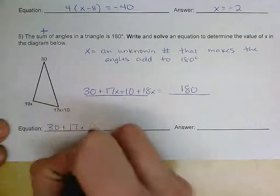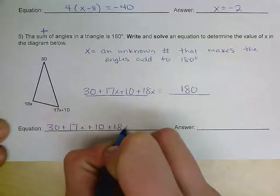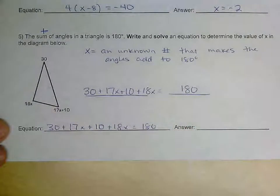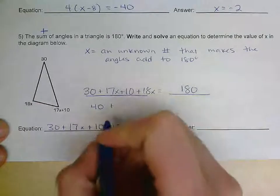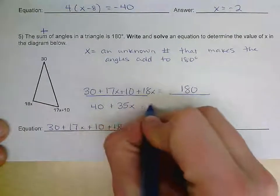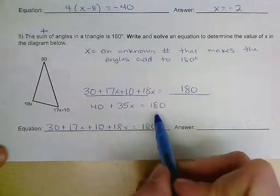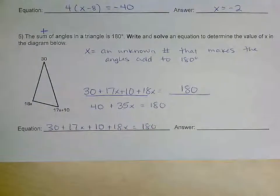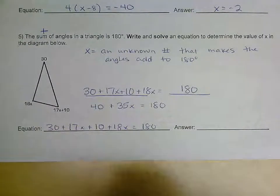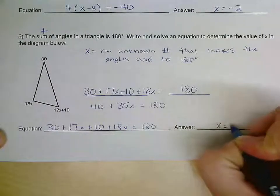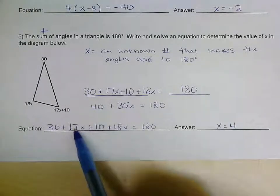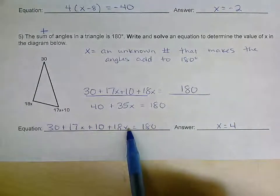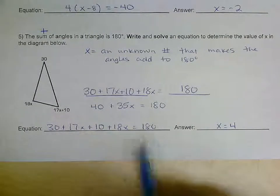We have 30 plus (17x plus 10) plus 18x equals 180. Simplifying: 30 plus 10 is 40, and 17 plus 18 is 35x, so 35x plus 40 equals 180. Subtracting 40 from both sides gives 35x equals 140, and dividing by 35 gives x equals 4. To check, plug 4 back in: compute 17 times 4, 18 times 4, add those with 10 and 30 — you should get back to 180.